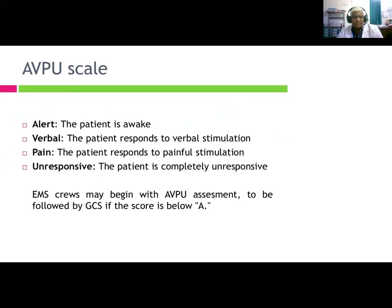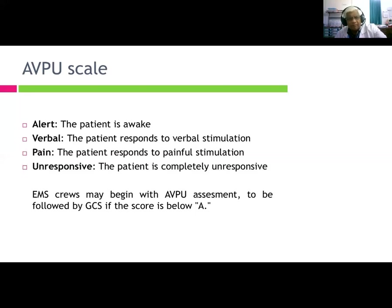The AVPU scale is used for emergency mental status assessment: Alert — the patient is awake; Verbal — the patient responds to verbal stimulation; Pain — the patient responds to pain stimulation; Unresponsive — the patient is completely unresponsive. EMS crews begin with AVPU assessment, followed by GCS if the score is below Alert.